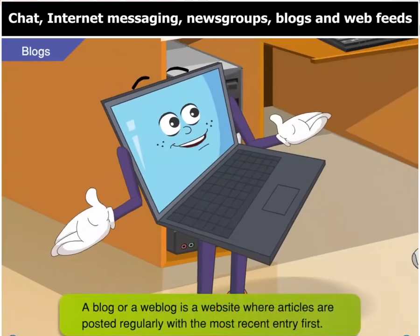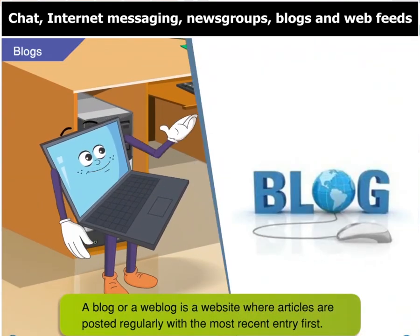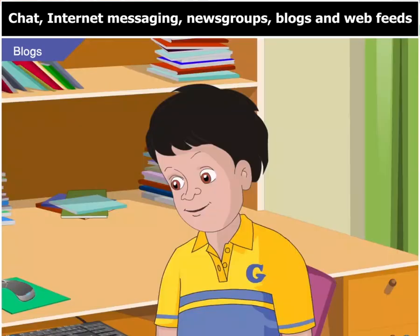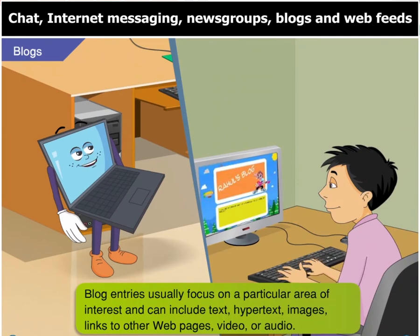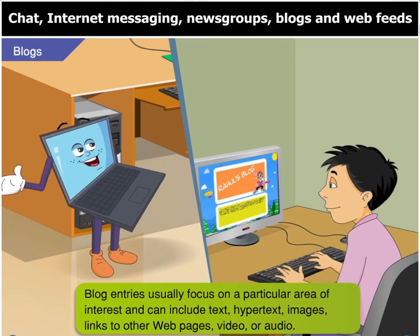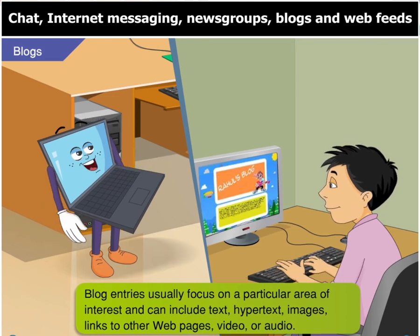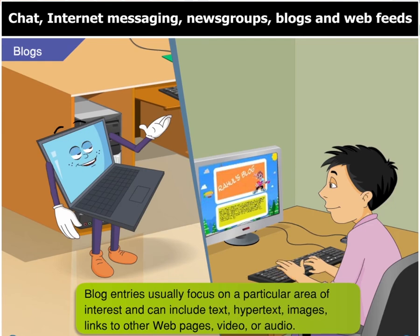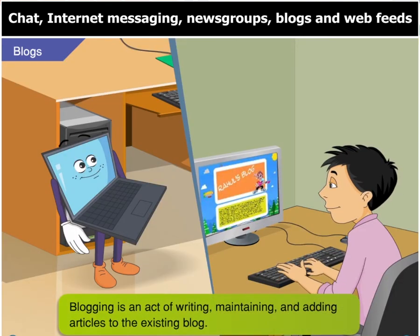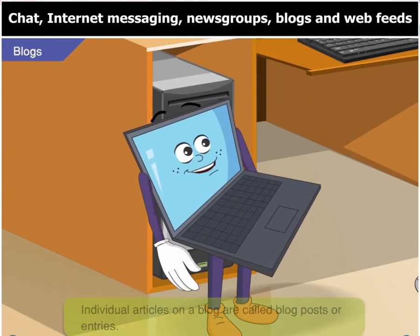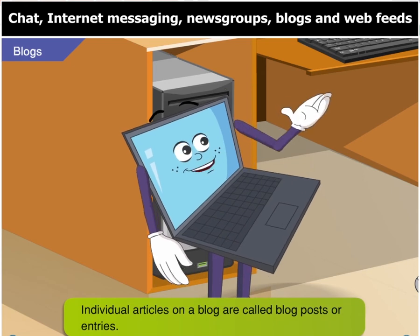What are blogs then? A blog is short for a web blog. It is a website where articles are posted regularly and displayed with the most recent entry first. Blog articles are on the author's particular area of interest and can include text, hypertext, images, links to other web pages, audio or even video. Many people, especially celebrities and experts, maintain a blog. The activity is called blogging. Writing a blog, maintaining and adding articles to the existing blog is called blogging. Individual articles on a blog are called blog posts or entries.